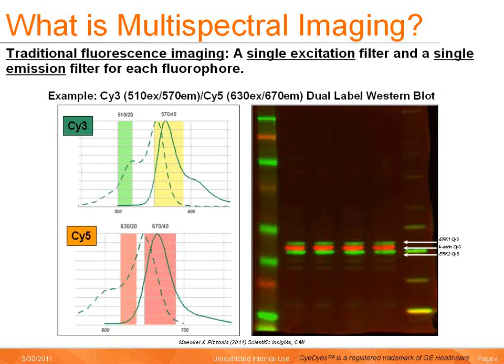Multispectral fluorescent imaging for biological applications differs from traditional fluorescent imaging in that traditional fluorescent imaging utilizes a single excitation filter and a single emission filter for each fluorophore in the mix. A common traditional fluorescent imaging setup utilizes Cy3 and Cy5 for multiplex imaging. These dyes are frequently employed in multiplex applications where subsets of DNA or protein are differentially labeled. Cy3 and Cy5 have reasonably separate peak excitations and emissions, separated by approximately 100 nanometers. In the example shown here of a dual-label Western blot, beta-actin was labeled with Cy3 and ERC was labeled with Cy5.